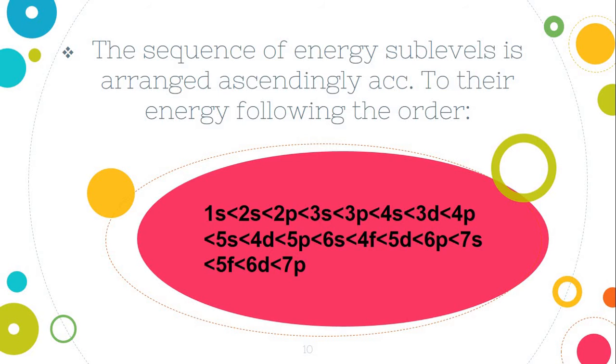The sequence of energy sublevels is arranged ascendingly according to their energy in the following order: 1s, 2s, 2p, 3s, 3p, 4s, 3d, 4p, 5s, 4d, 5p, 6s, 4f, 5d, 6p, 7s, 5f, 6d, and 7p. We have to know this arrangement because we are going to do the electronic configuration for each element using this arrangement.